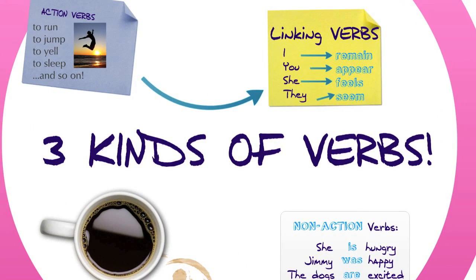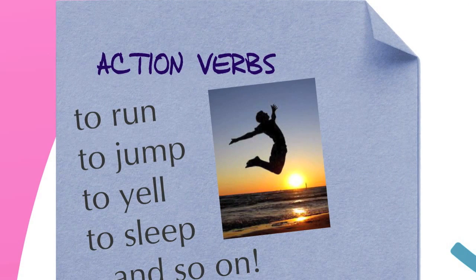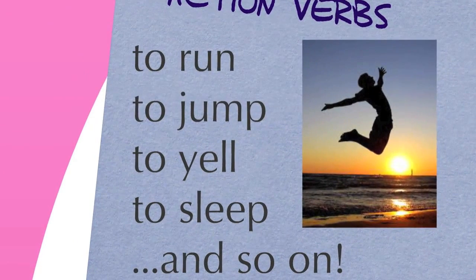There are three kinds of verbs. The first kind is an action verb, which, as previously mentioned, describes the action taking place in the sentence. Some examples of these action verbs are to run, to jump, to yell, to sleep, and so on.